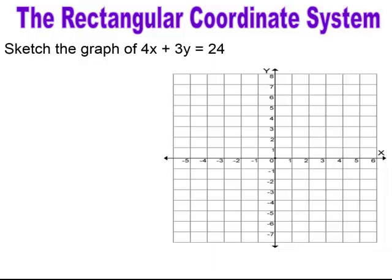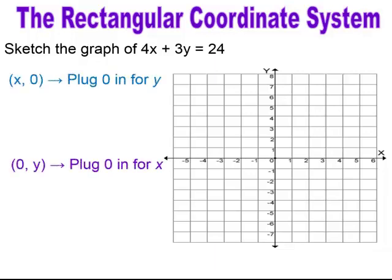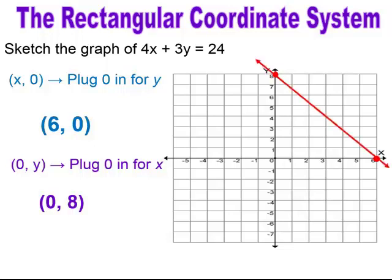Pause and try. You're finding your X-intercept — it should be (6, 0) — and your Y-intercept is (0, 8). When you plot these points, make sure you're plotting them in the right position: your X-intercept is at 6, your Y-intercept is at 8, and you graph the line.